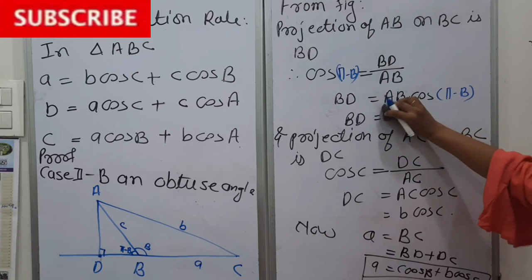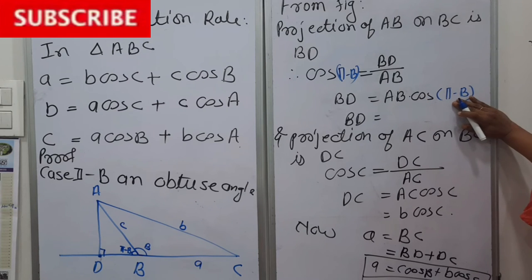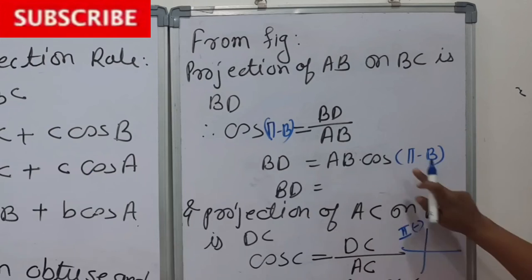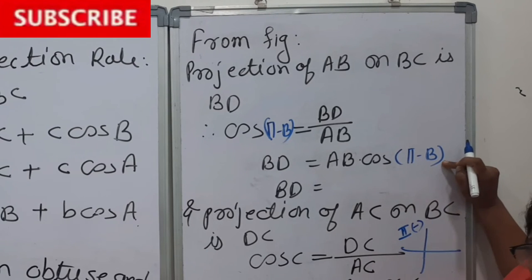Now we know π minus B means second quadrant. In second quadrant, cos is negative always. And we know cos of π minus any angle is cos of that angle.